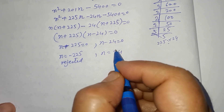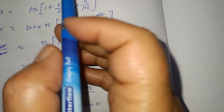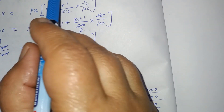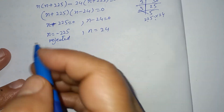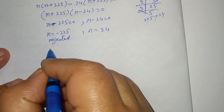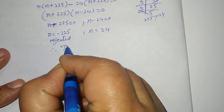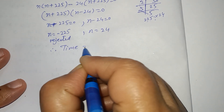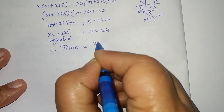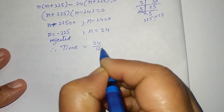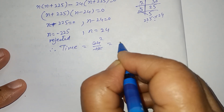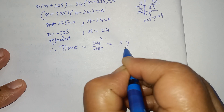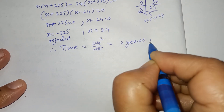Ab usne bola tha, kya puchha hai usne — find the time in years. Years mein nikalenge. Therefore, time is equal to 24 upon 12, is equal to 2 years.